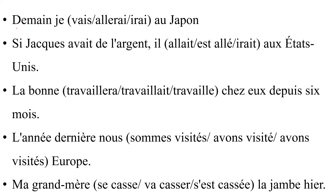Now 'demain' corresponds to tomorrow — simple future. For 'aller' in the simple future, 'aller' is irregular: the future root is 'ir-'. Add the future ending '-ai' for 'je'. So it is 'irai'. There is no word like 'allerai' — that doesn't exist. 'Irai' is the correct answer.